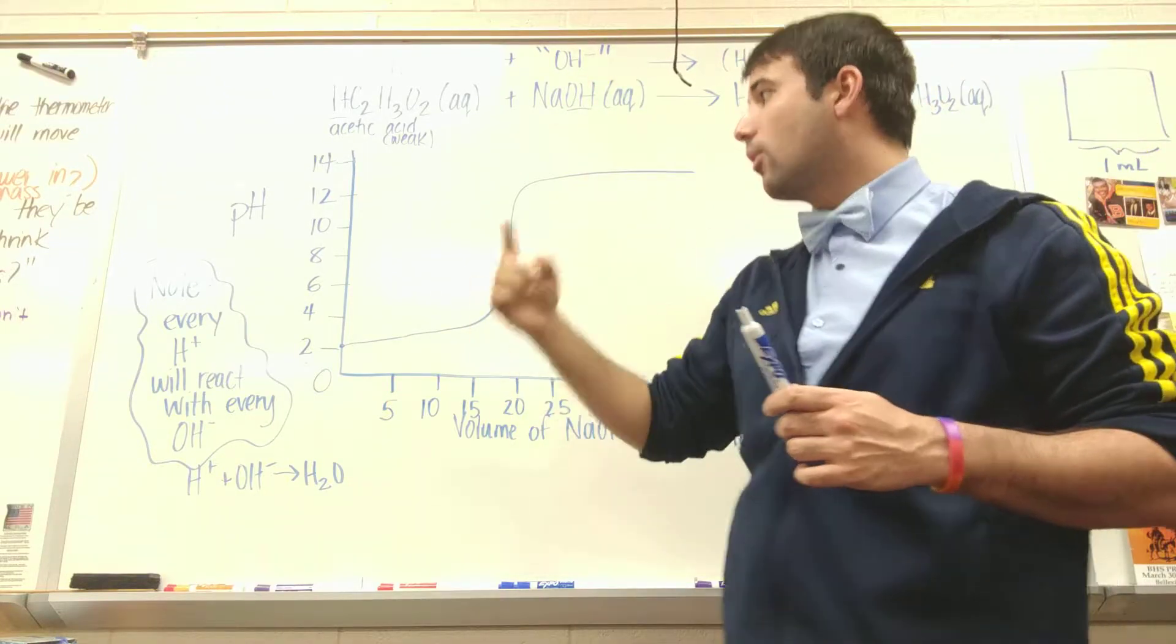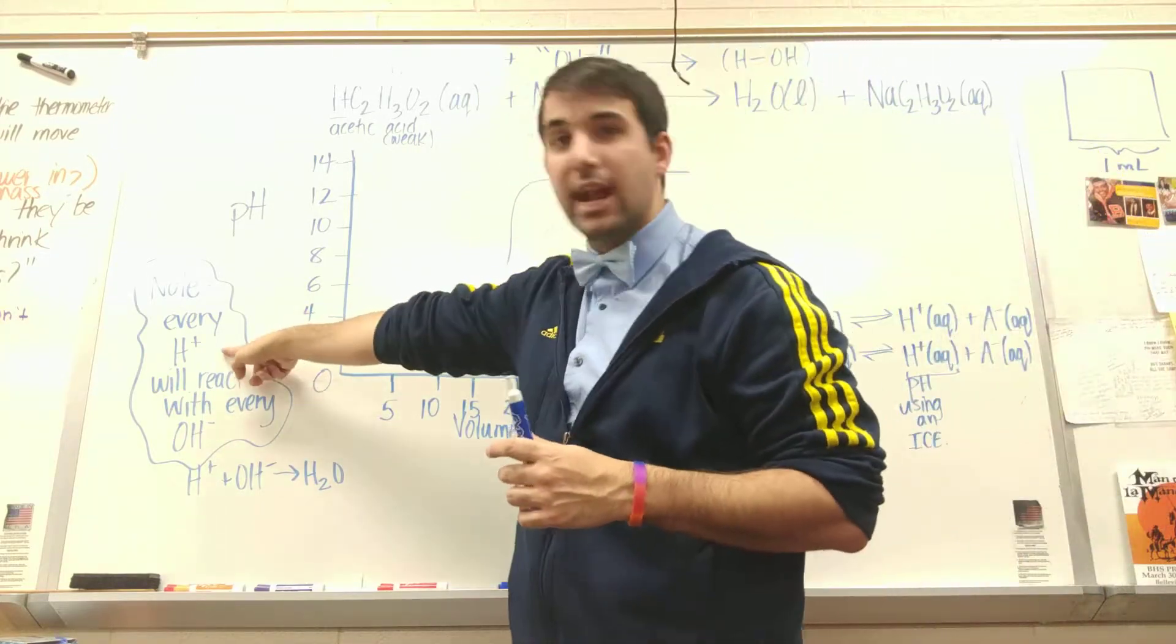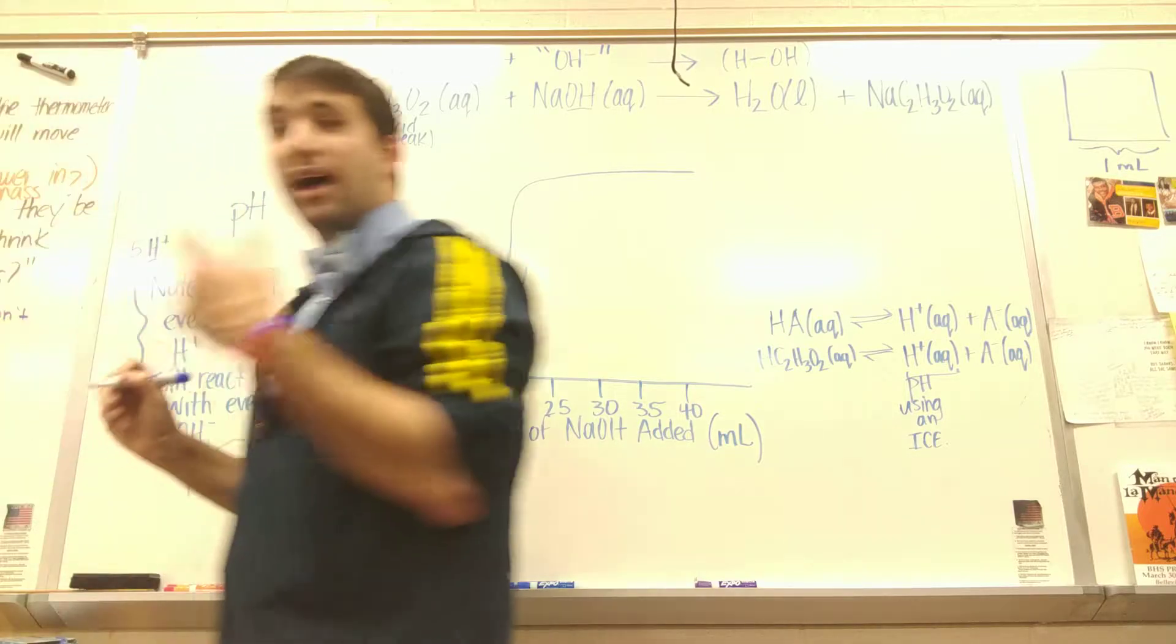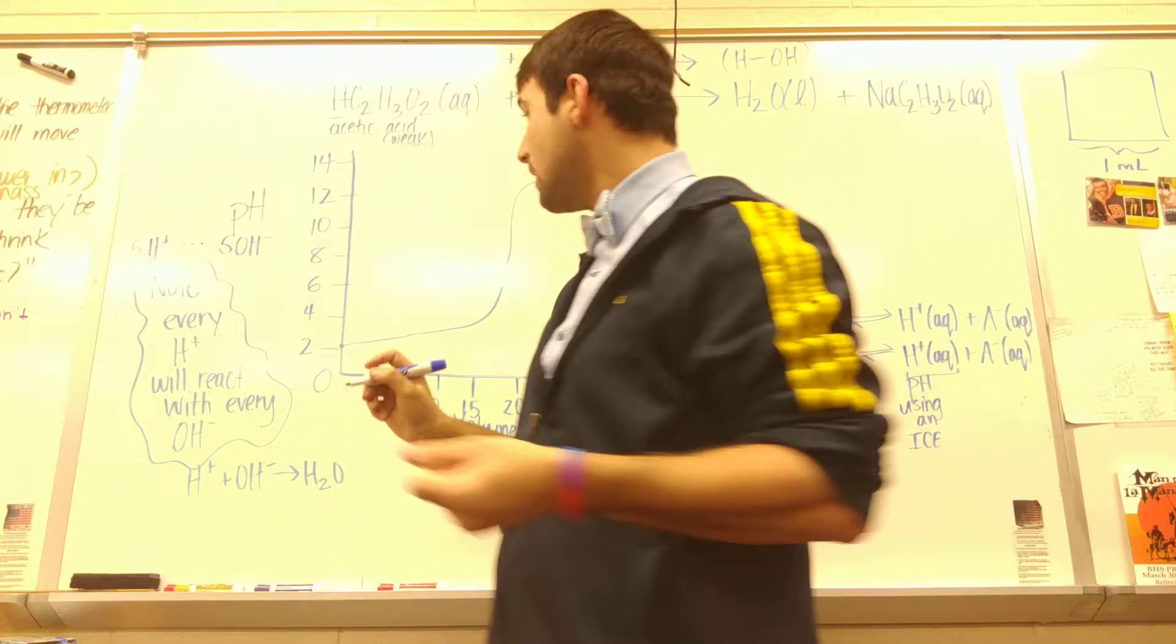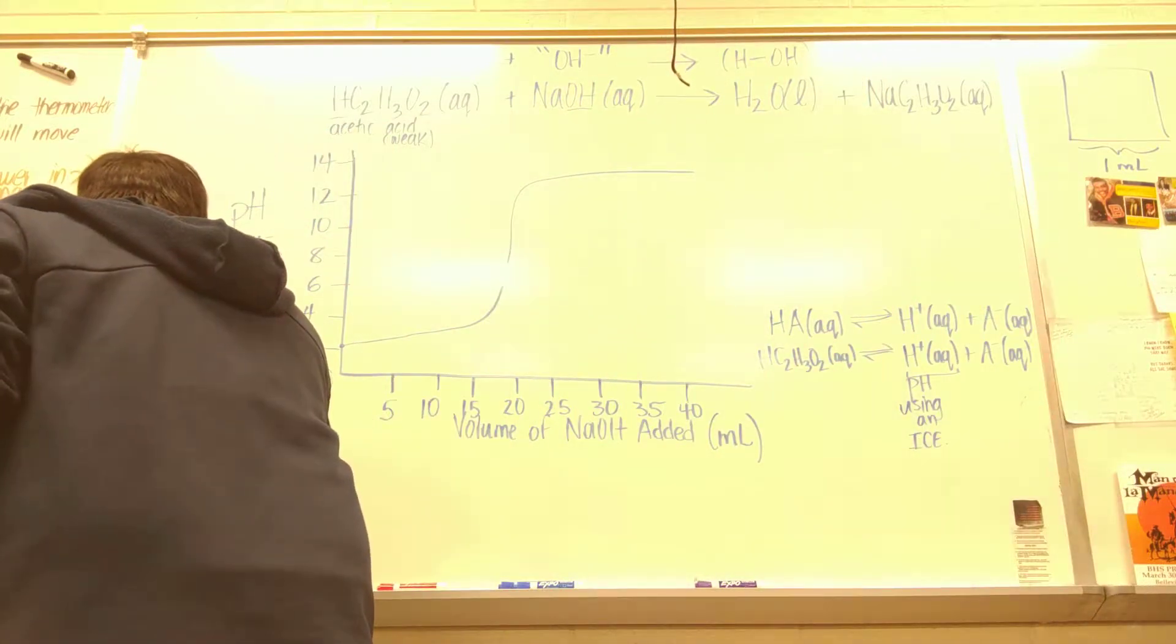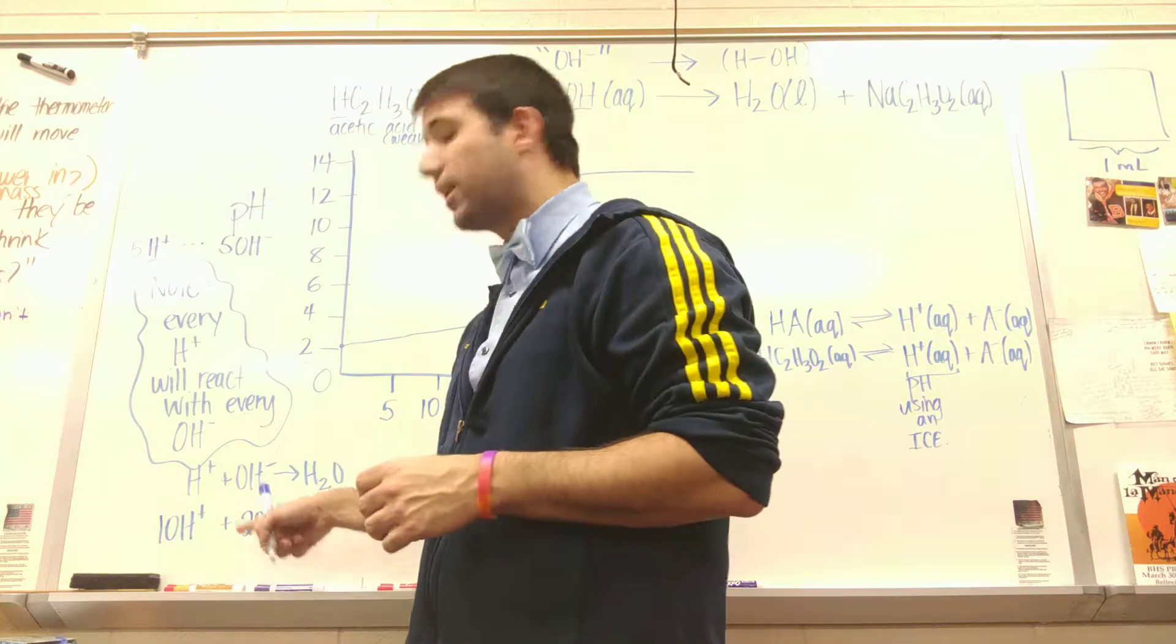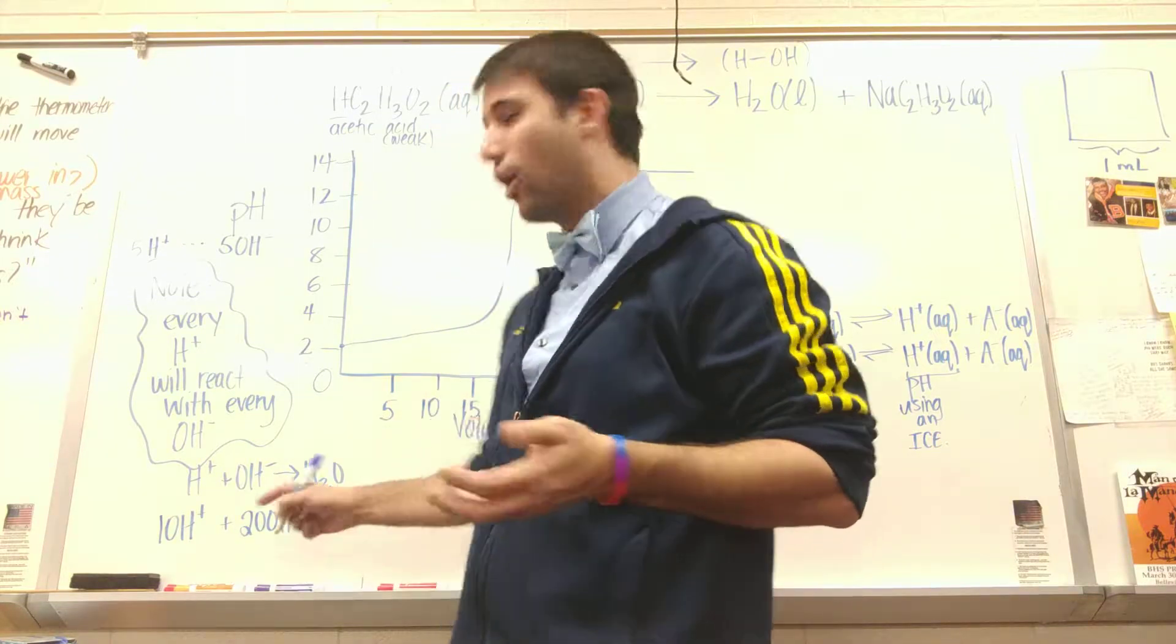One thing you do need to know, if I have an acid, every acid or every H+ will react with every OH-. If I have five H+, that will react with five OH-. And so let's say I have ten H+ but I have 20 OH-, then if I have ten H+ and 20 OH-, I have more OH-. So only ten of those H+ can react with only ten of the OH-.